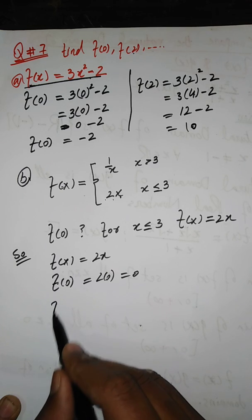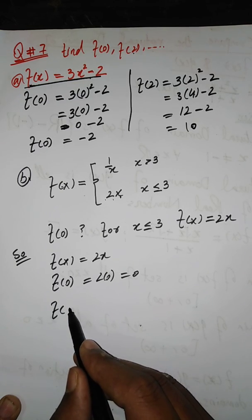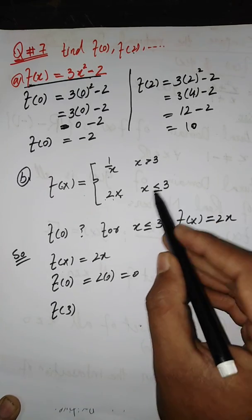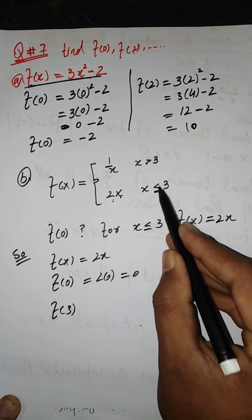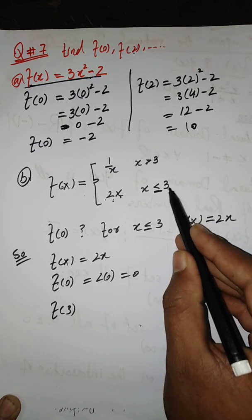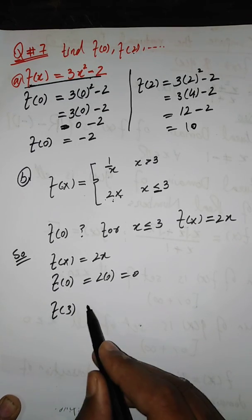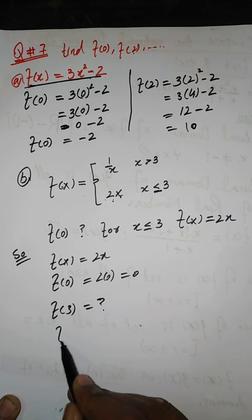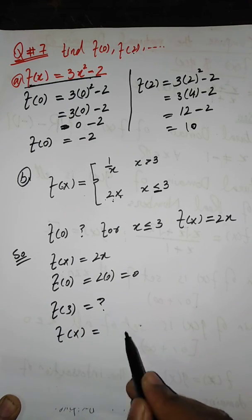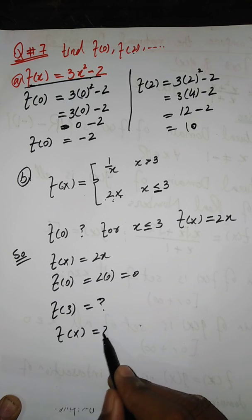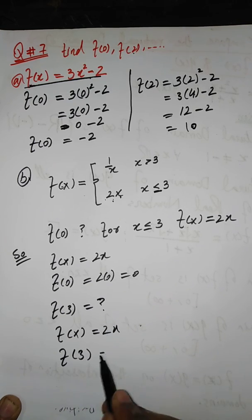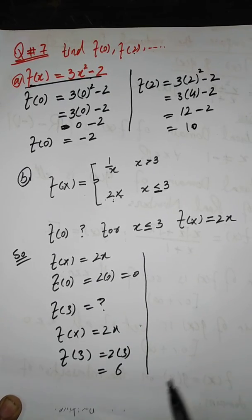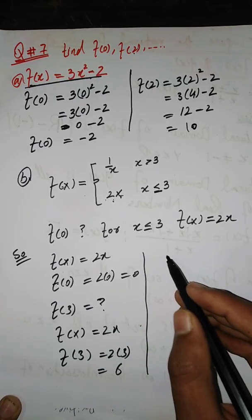For f(3): since 3 satisfies x less than or equal to 3, we take the same function f(x) = 2x. So f(3) = 2 times 3, which equals 6. The remaining values you can also solve as homework — it is very simple.